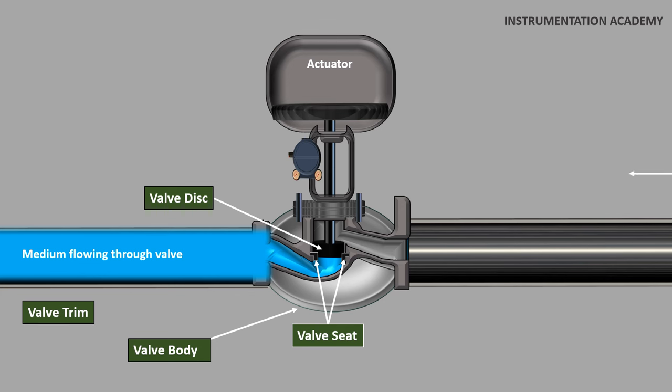Valve stem. The stem is connected to the actuator from one side and the other side is connected to the disc. The stem of the control valve provides movement to the disc which results in opening or closing of the valve.